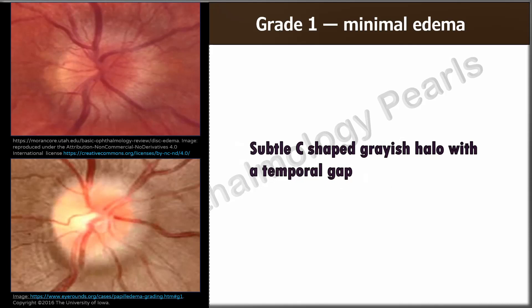In grade 1, there is a subtle C-shaped grayish halo with a temporal gap in the region of the papillomacular bundle. This is due to a mild obscuration of the nasal disc margin and disruption of the normal radial arrangement of nerve fiber bundles. The temporal disc margin is normal.